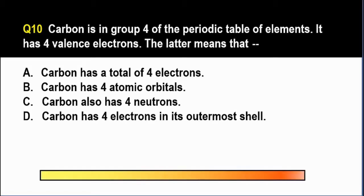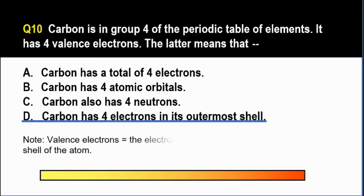And the correct answer is letter D. Valence electrons pertain to the electrons in the outermost shell of your atom. So when we say that carbon has 4 valence electrons, hindi ibig sabihin na meron siyang total of 4 electrons. It just means that carbon has 4 electrons in its outermost shell. In other words, or in effect, carbon would have a total of more than 4 electrons, there being 4 electrons in its outermost shell.